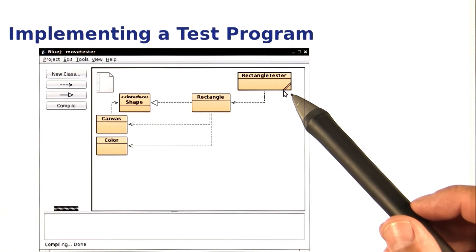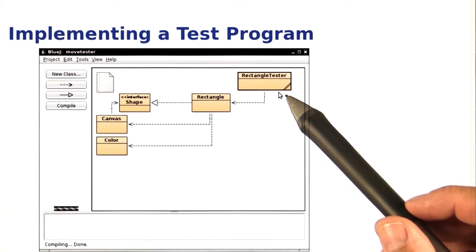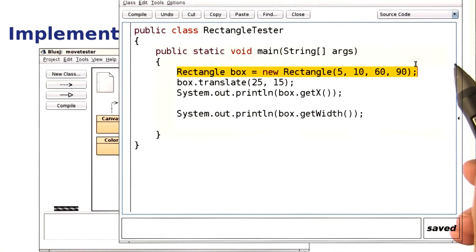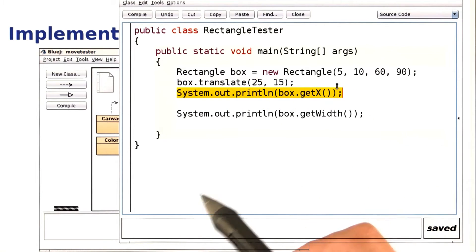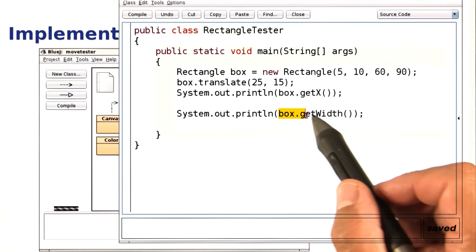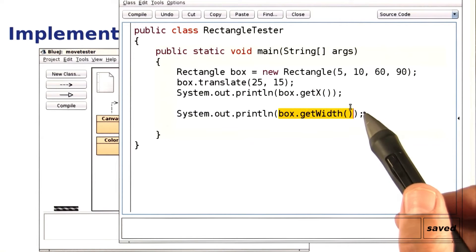Okay, here we are in BlueJ, and I'm going to write a program that tests the translate method of rectangles. Let's have a look. Here, we construct a rectangle, call the translate method, print out what happens to the x coordinate, and also print out what happens to the width of the rectangle.